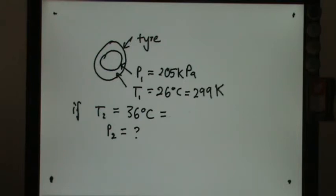And this T2 is 36. They say if the temperature is increased to 36 degrees Celsius from 26 to 36. So 36 degrees Celsius is actually 309 Kelvin.